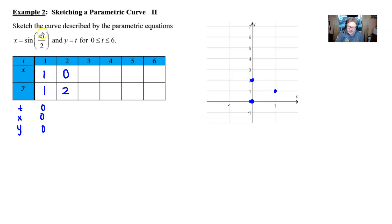Plugging in 3, the sine of 3 pi over 2, that's one that you might have to think about just a little bit. But it's actually going to give you a negative 1 value. And if you haven't figured it out by now, the y values are just going to mimic the t value. They're going to be the same. So that puts us here at negative 1, 3.